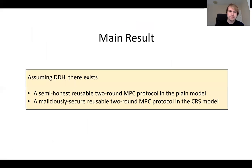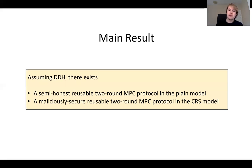Our work also fits into this second approach, and we show how to weaken the assumption even further. In particular, we show how to maintain reusability just based on the DDH assumption. Assuming DDH, there exists a semi-honest reusable two-round MPC in the plain model and a maliciously secure reusable two-round MPC in the CRS model.